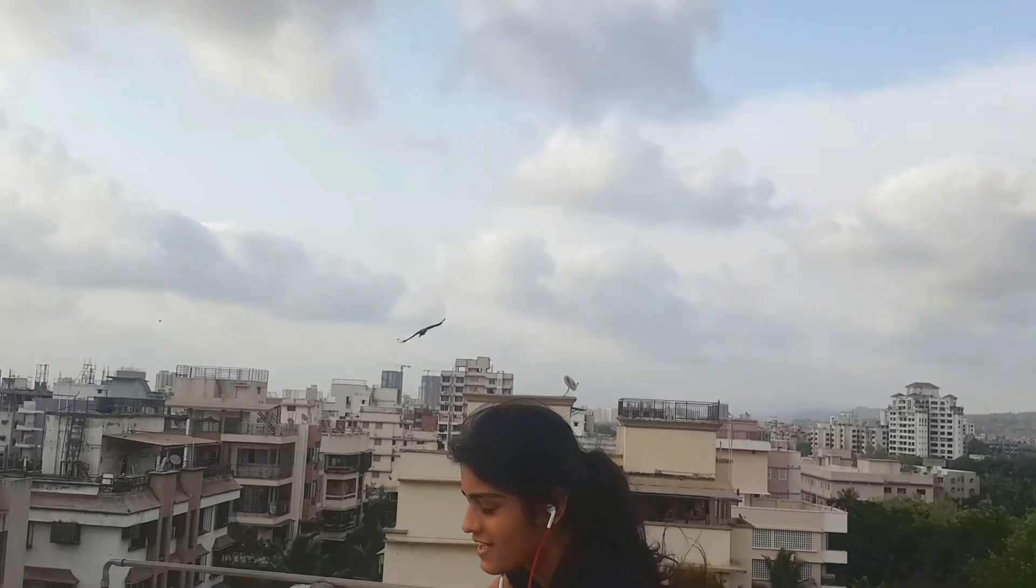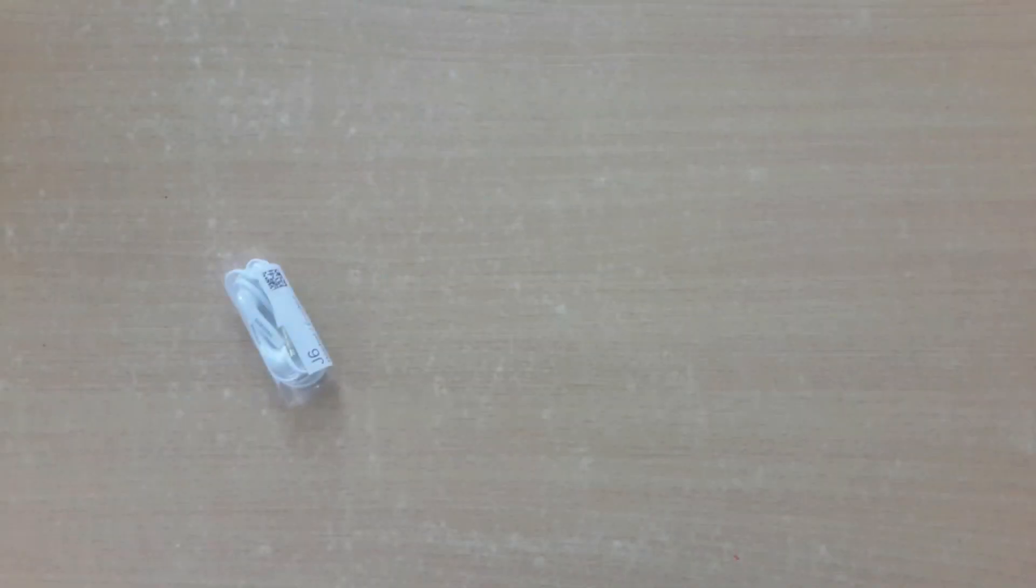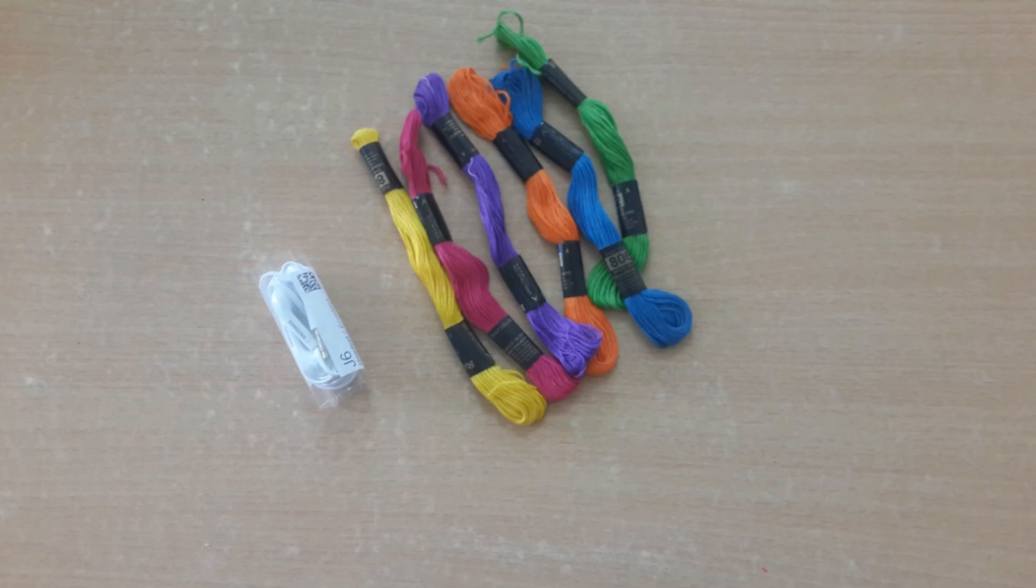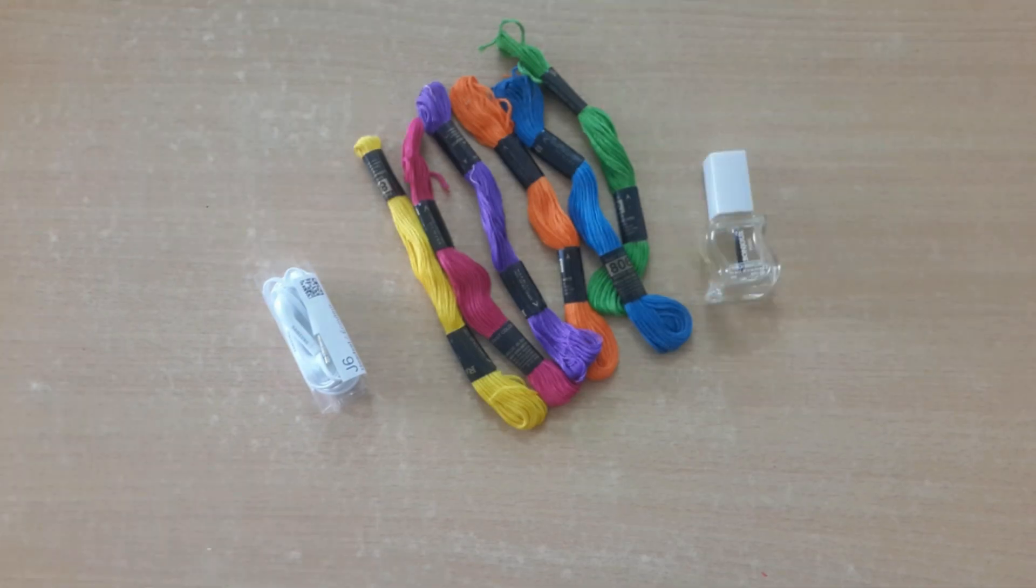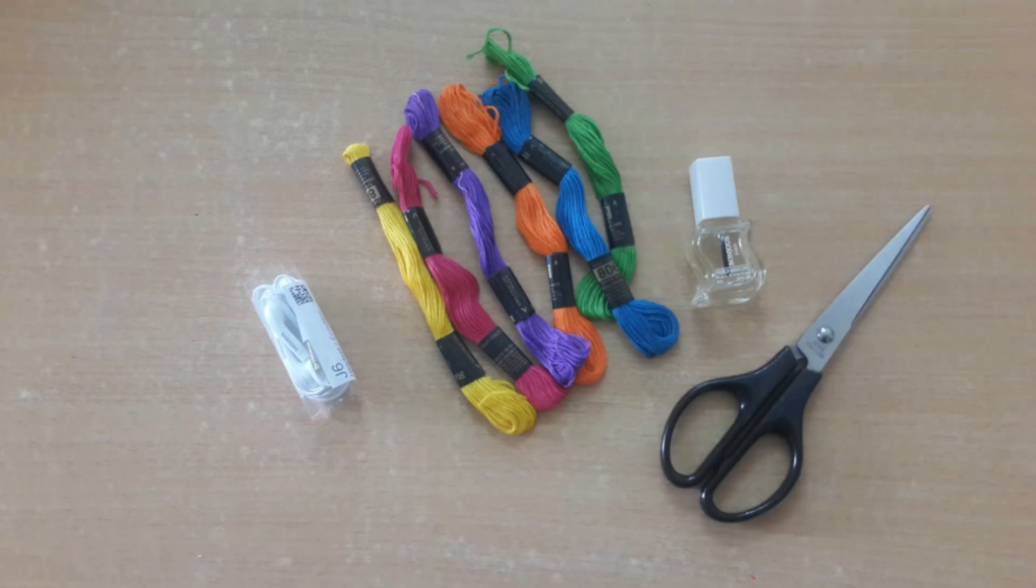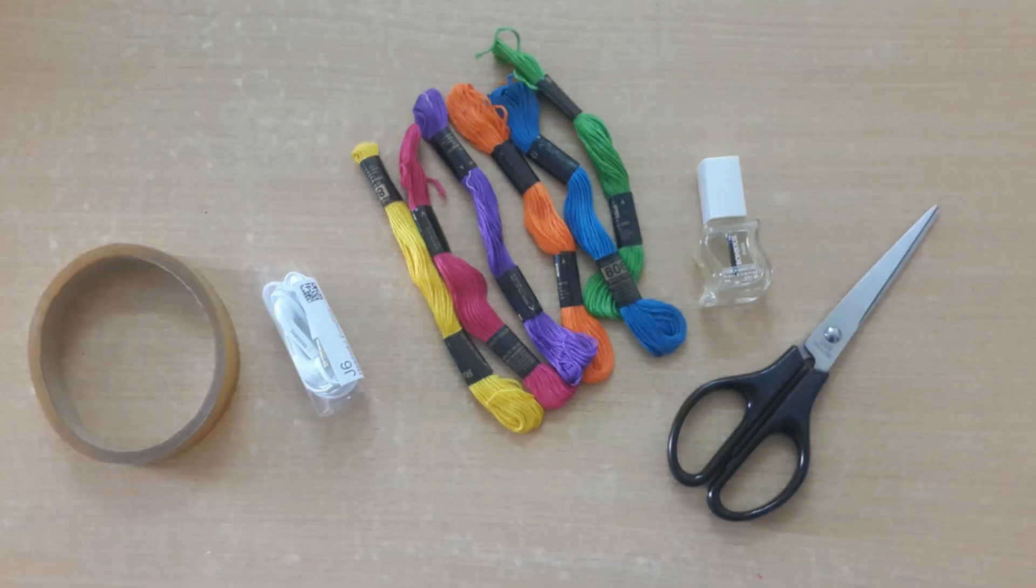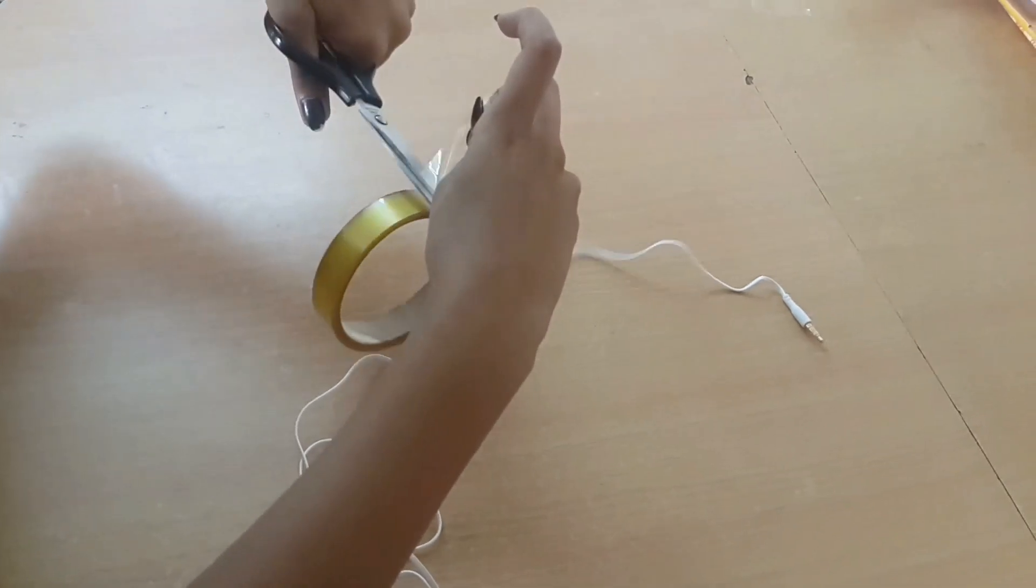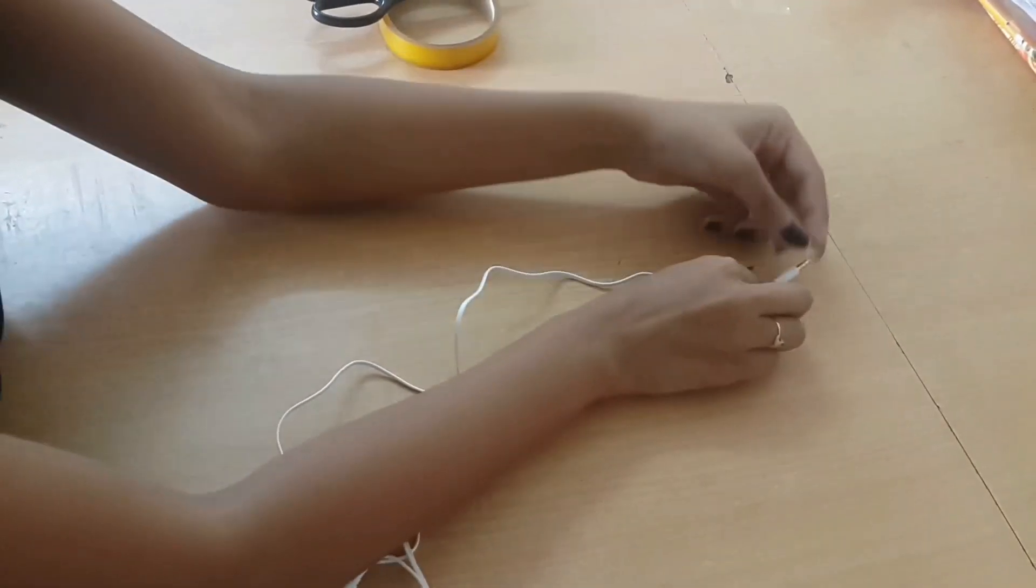So let's get started. The first thing you need is headphones, some threads, clear nail paint, scissors, and some tape. The first thing you're going to do is stick your headphones to one place so that it doesn't move.